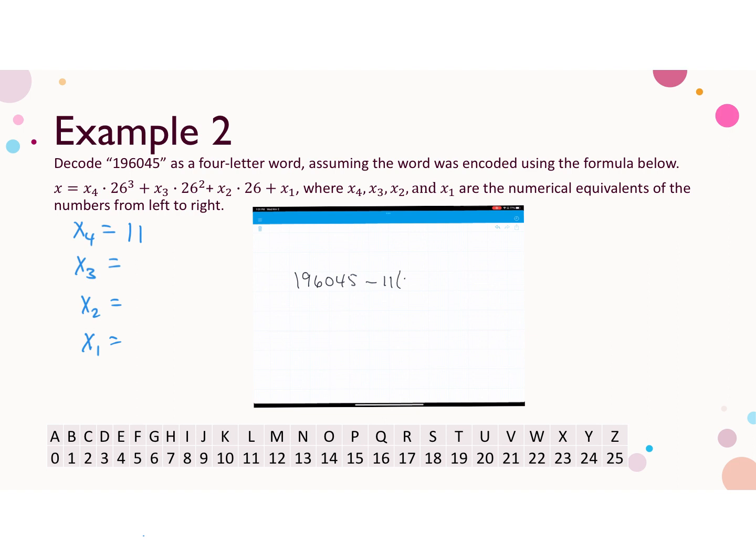Then we want to subtract off 11 times 26 cubed, because we've just used that. We get 2,709, we're going to divide that by 26 squared to figure out X3, and that is 4.